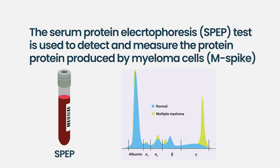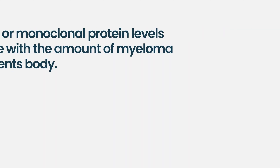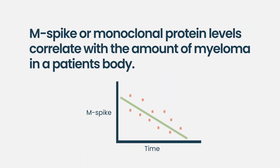We know that the M spike correlates with the amount of myeloma in a patient's body. So as we treat, we follow that number to determine the extent to which patients are responding to treatment, and we use that to inform some of the treatment decisions we make.